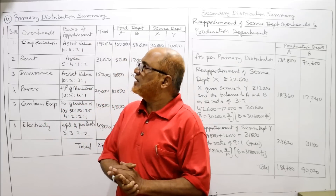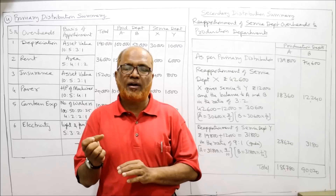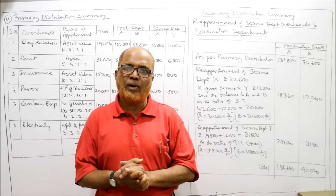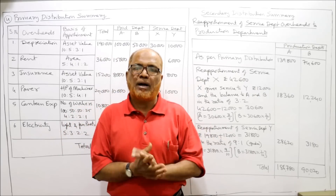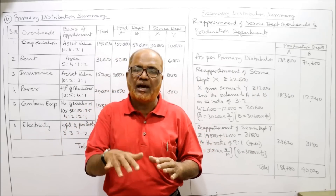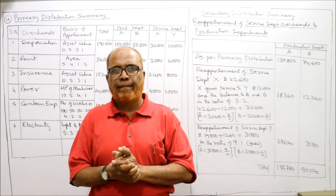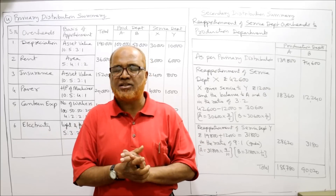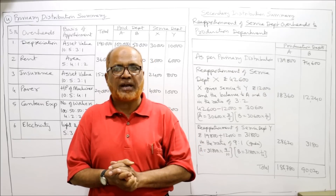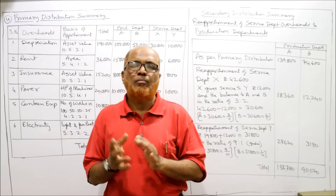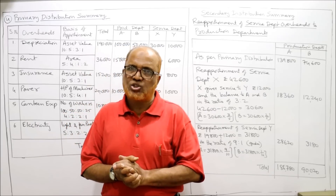Problem 4 is now complete. Students should now have a good command over the topic of overheads — how to allocate and apportion overheads among different departments, and how to perform both primary and secondary (reapportionment) distribution. If you are satisfied with this lecture, please like the video, share it in your groups, subscribe to the channel, and press the bell icon to get notifications. We'll continue with the next problem in the next video.